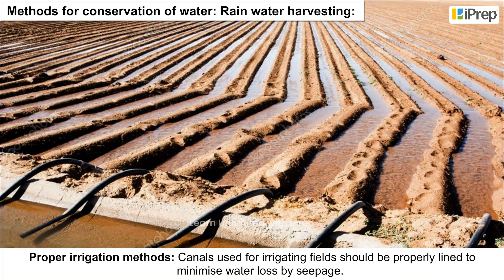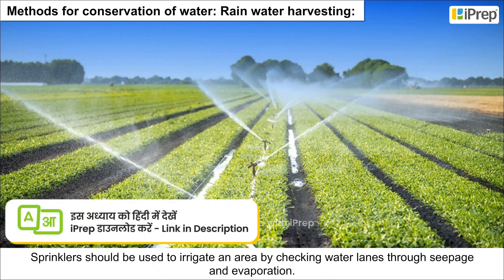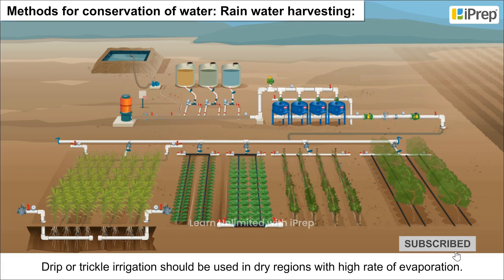Proper irrigation methods include: canals used for irrigating fields should be properly lined to minimize water loss by seepage. Sprinklers should be used to irrigate an area by checking water loss through seepage and evaporation. Drip or trickle irrigation should be used in dry regions with high rates of evaporation.